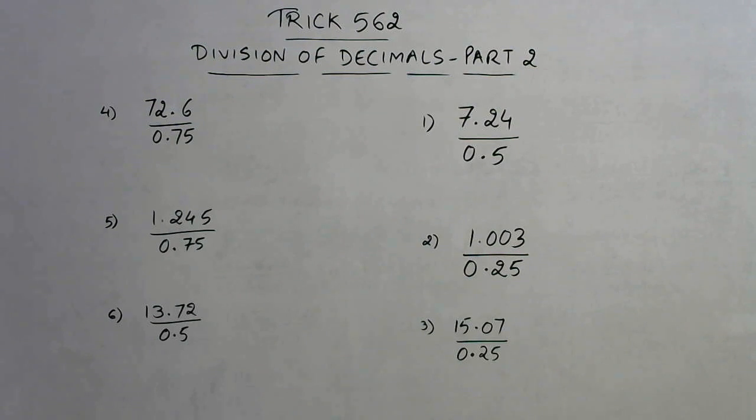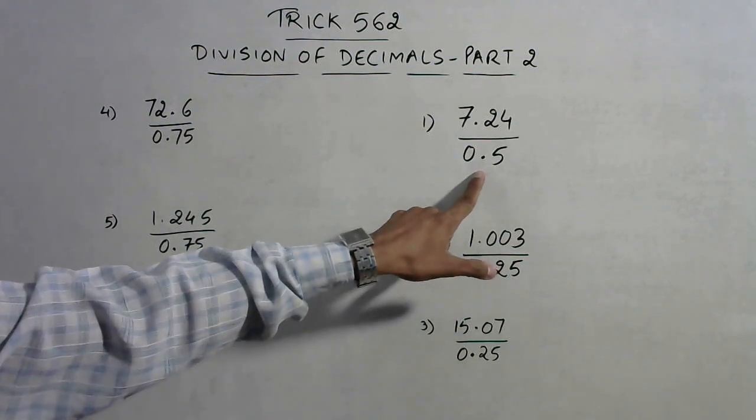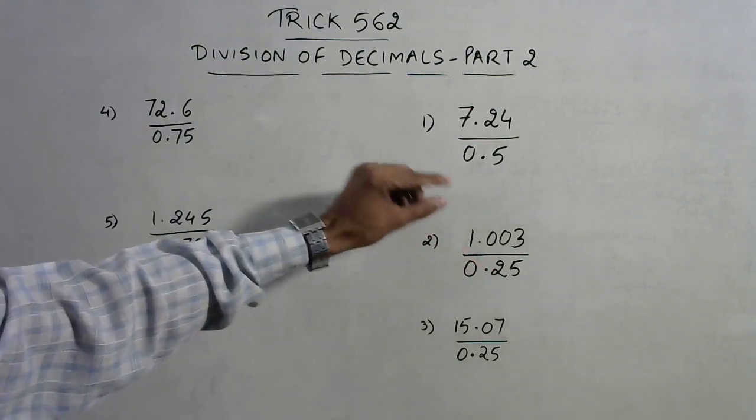Now see, division by 0.5 is nothing but doubling. Whenever we need to divide any number, whether in decimals or a perfect natural number, by 0.5, then we just double the numerator.